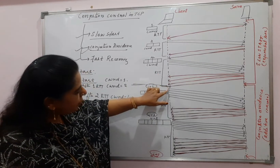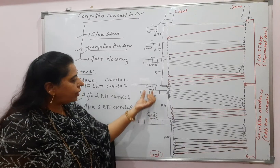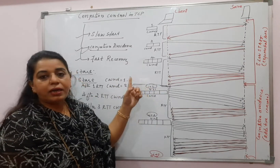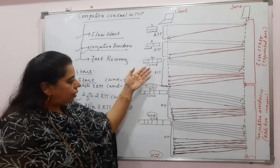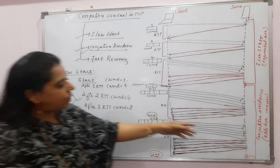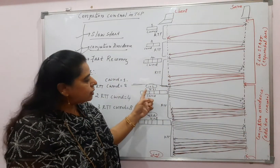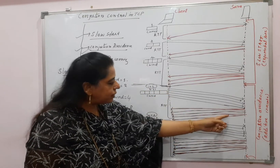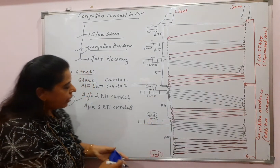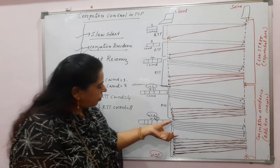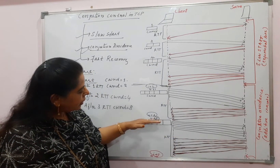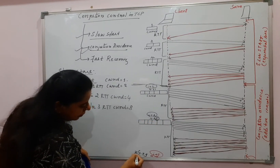In the Congestion Avoidance phase, whatever the CWND value was at the end of slow start — say 4 — it increases by just one each RTT: 4+1=5, then 6, then 7. The other name for congestion avoidance is Additive Increase. So it sends five segments, receives acknowledgements, then increases by one again, and so on. This is in contrast to the exponential doubling of slow start.